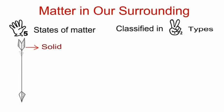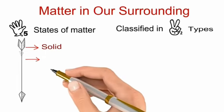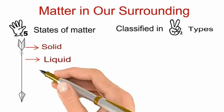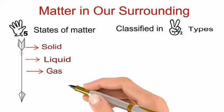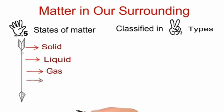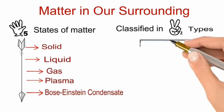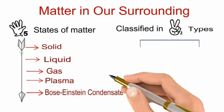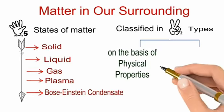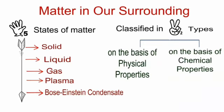The five states of matter are solid, liquid, gas, plasma and Bose-Einstein condensate. Matter is classified in two types according to their physical properties and their chemical properties.